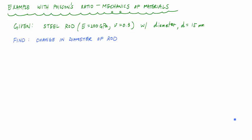In this problem, we're given a steel rod which has a modulus of elasticity of 200 gigapascals, a Poisson's ratio of 0.3 with a diameter D of 15 millimeters. So this is a circular rod.